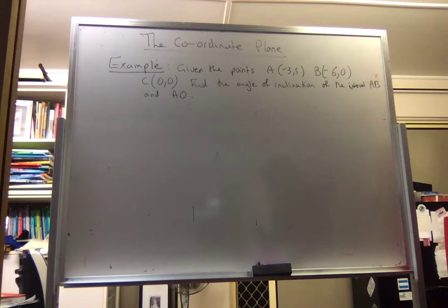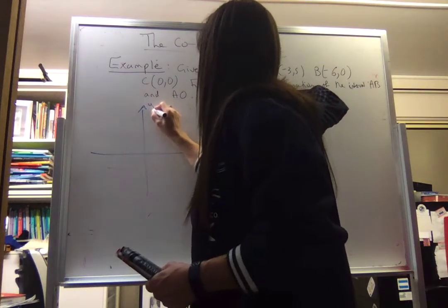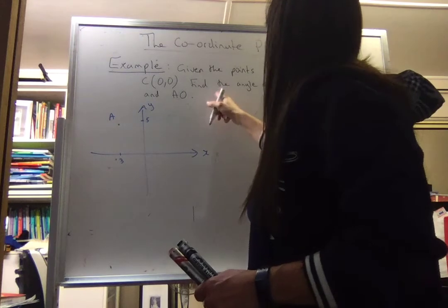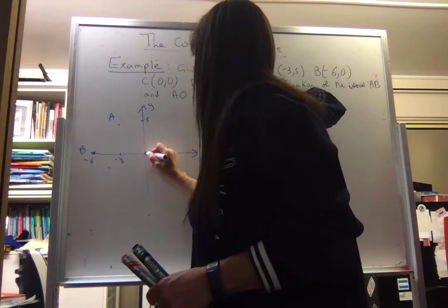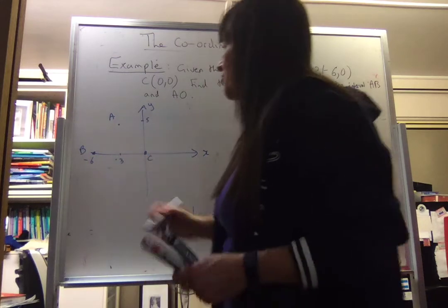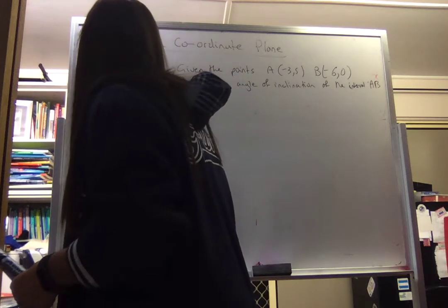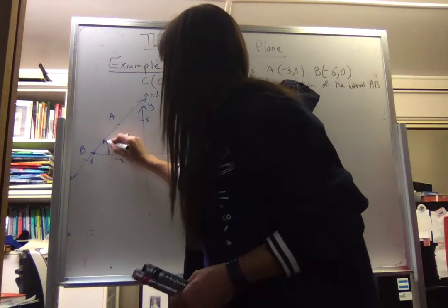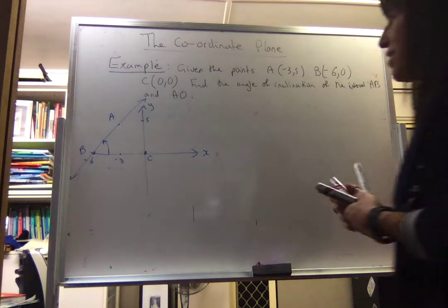Let's have a look and see what this is asking us to do. Always just get an idea of what's going on — let's quickly plot these points. Negative 3, 5 — there's A. B is (negative 6, 0), somewhere over here. And (0, 0) is C, right at the origin. So I have three points here. I want to find the angle of inclination of the interval AB. AB is over here, and if I draw this line, I need to find this angle here — that's what I'm looking for.